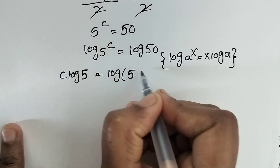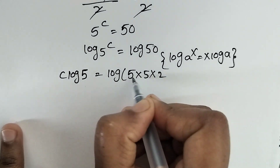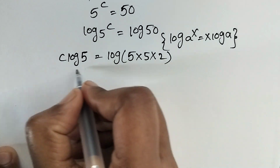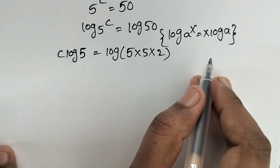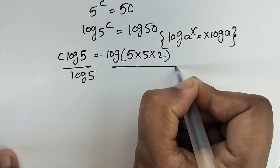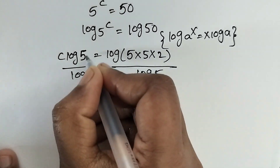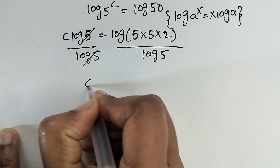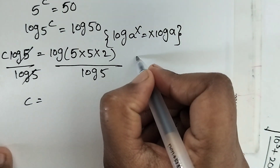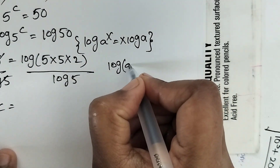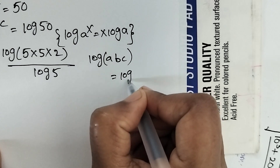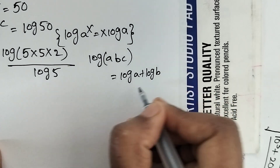We have c·log 5 = log 50. Now 50 can be written as 5 times 5 times 2, so log 50 = log(5·5·2). Now divide both sides by log 5. This expression is in the form log(a·b·c) = log a + log b + log c.